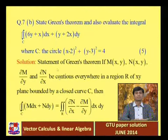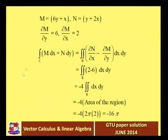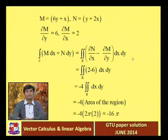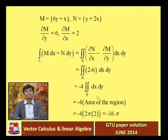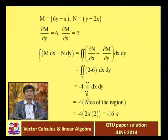Using Green's theorem to evaluate the integral over circle (x-2)² + (y-3)² = 4: M = 6y + x and N = y + 2x, so del M/del y = 6 and del N/del x = 2. Applying Green's theorem, the integral equals the double integral of (2 - 6) dx dy = -4 times the double integral of dx dy, which is exactly the area of the region.